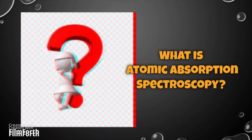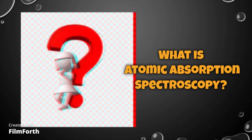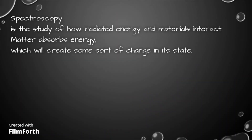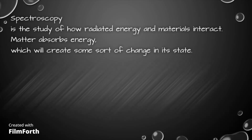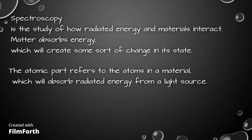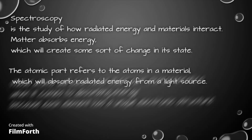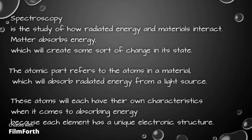What is Atomic Absorption Spectroscopy? Spectroscopy is a study of how radiated energy and materials interact. Matter absorbs energy which will create some sort of change in its state. The atomic part refers to the atom in a material which will absorb radiated energy from a light source. These atoms will each have their own characteristic when it comes to absorbing energy, because each element has a unique electronic structure.